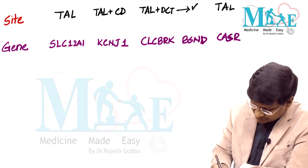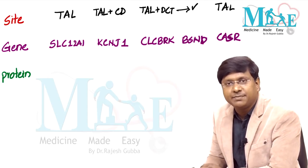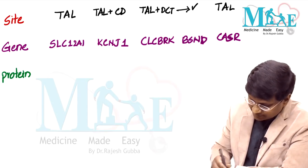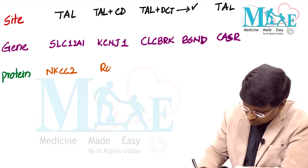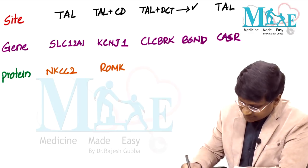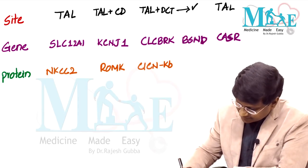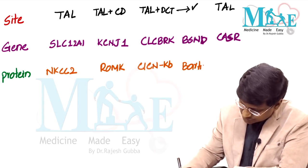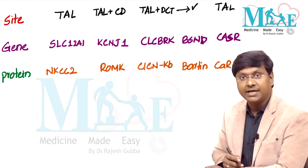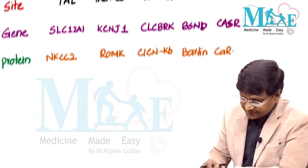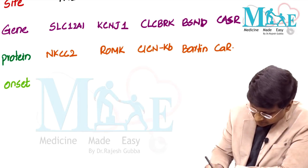The affected proteins in each type are: NKCC2 in type 1, ROMK in type 2, ClCNKB in type 3, Barttin in type 4, and CaSR in type 5. Regarding onset, types 1, 2, and 4 present prenatally and postnatally; type 3 has variable onset; type 5 has variable onset.